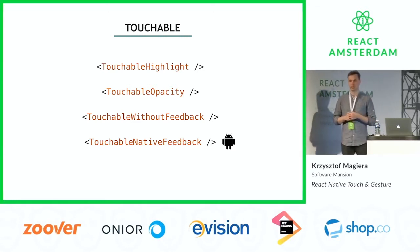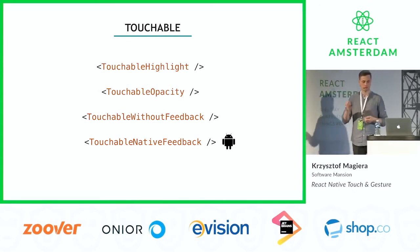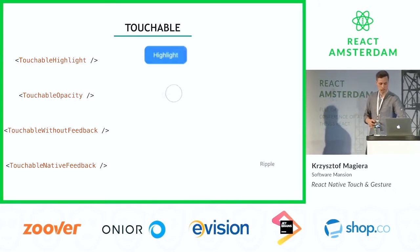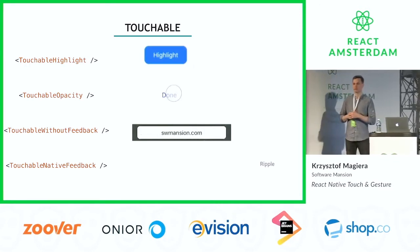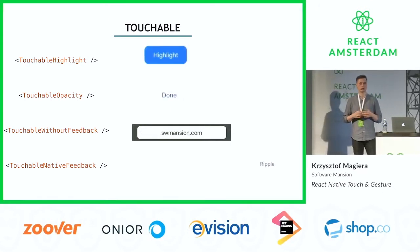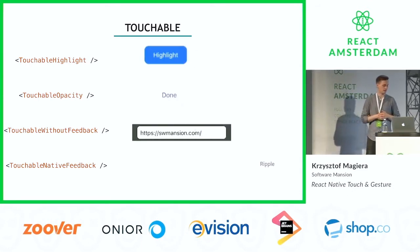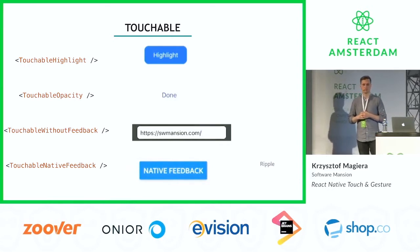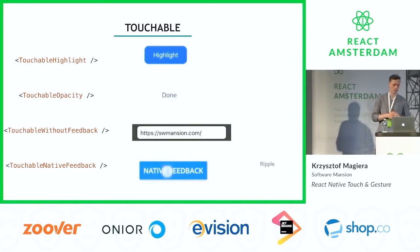Touchable highlight can be used for views that have a visible bound on the screen — the component highlights when you tap on it. Touchable opacity is used for text-only or icon-only buttons where we don't have a background to highlight, so we change the opacity instead. Touchable without feedback covers all other cases where we don't want a standard feedback interaction. And touchable native feedback is Android-only, providing a ripple effect for both bounded and unbounded components.